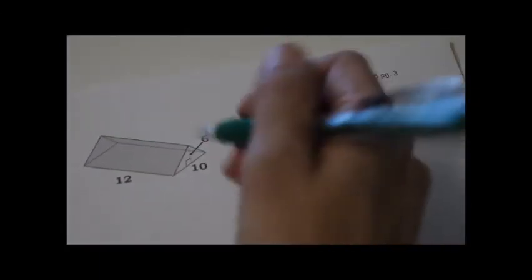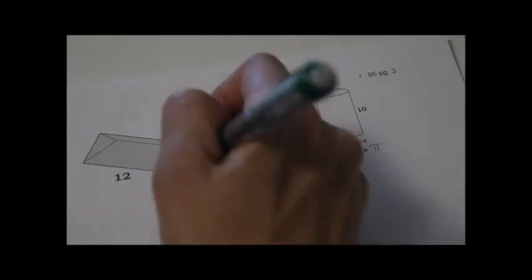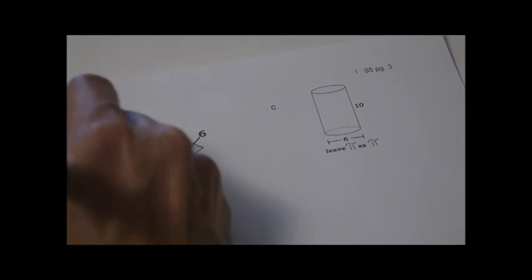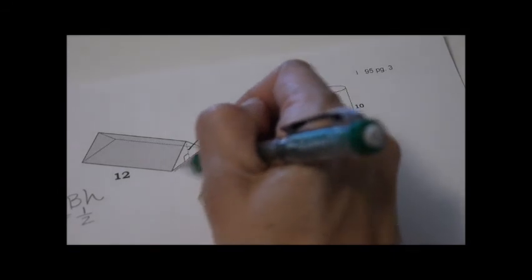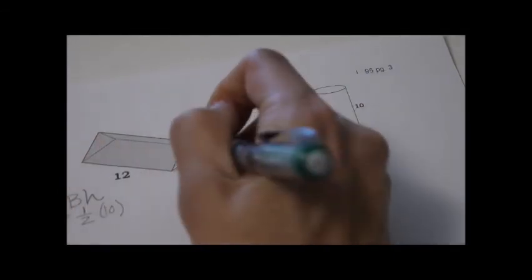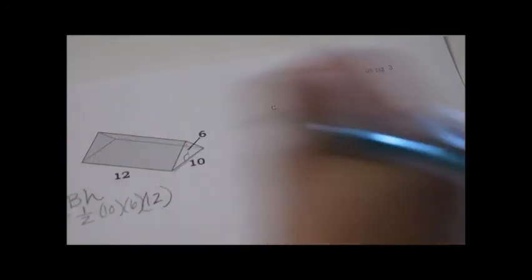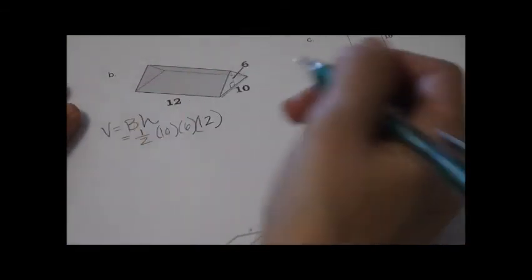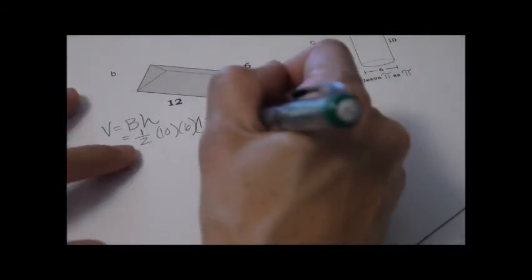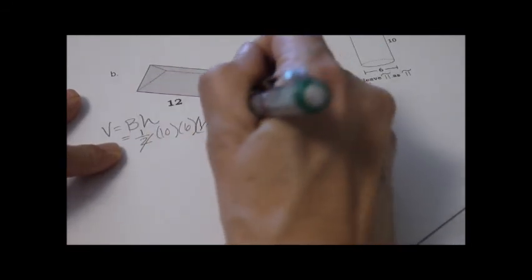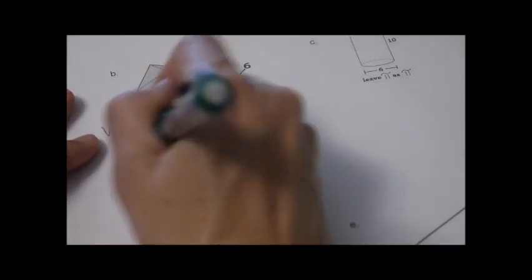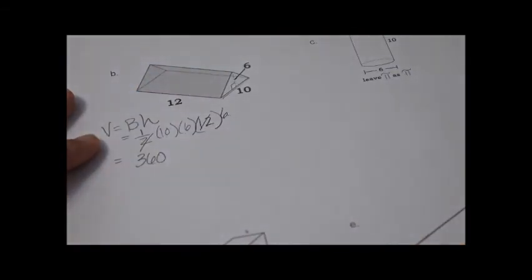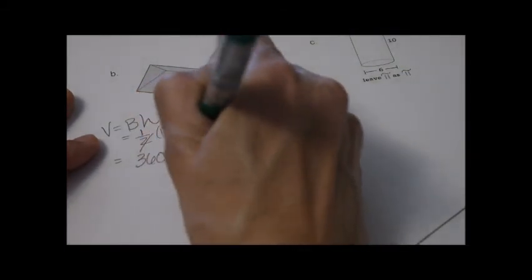Here we have another triangular prism. Volume equals area of the base times the height. The area of the base is one-half, the base of this triangle is 10, the height of this triangle is 6, and the height of the prism is 12. That gives us 10 times 6 times 6 divided by 2, which is 36 times 10: 360 centimeters cubed.